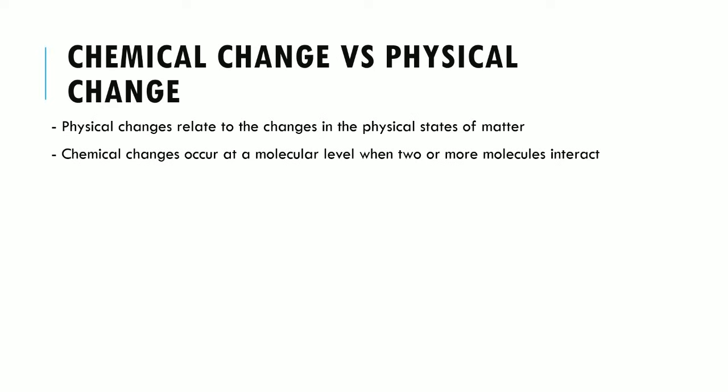The first thing you have to understand is the differences between a chemical change and a physical change. A physical change relates to the changes in the physical states of matter — for example, ice turning into water. A chemical change occurs more at a molecular level, when two or more molecules interact with one another.